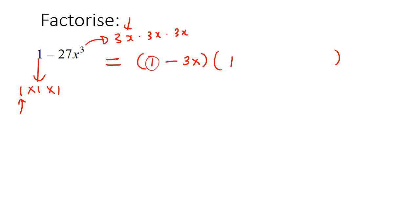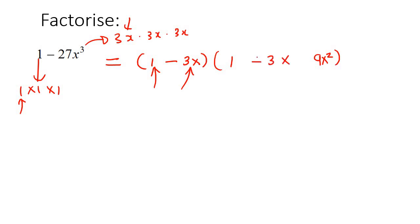Then you're going to square this number — 1 times 1 is 1 — and then you're going to square this number — 3x times 3x is 9x squared — and put that in the big bracket. In the middle, you multiply these two numbers together, giving negative 3x, but then switch the sign to the opposite: if it was negative, make it positive; if it was positive, make it negative. This last term is always going to be a positive.